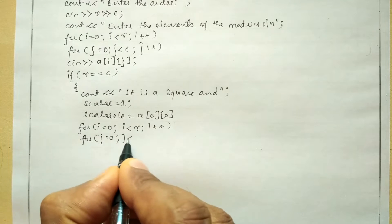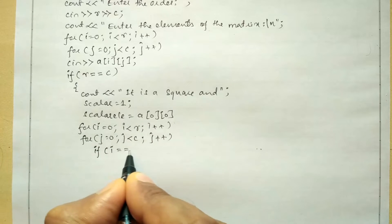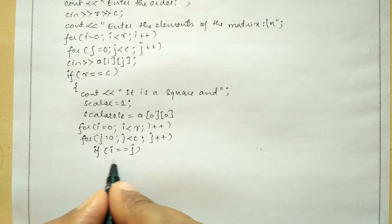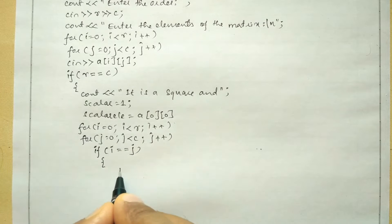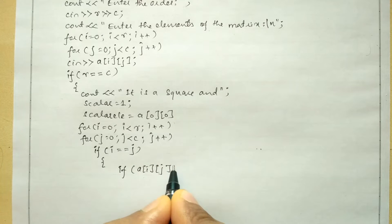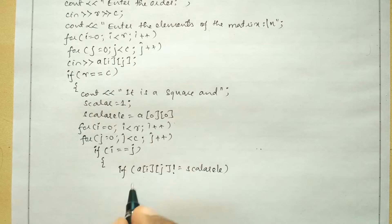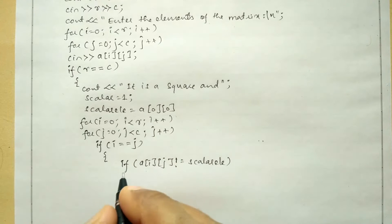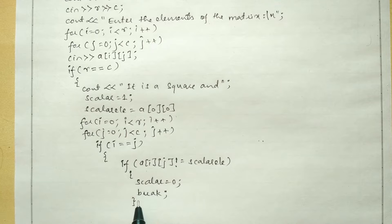Next, we use the same nested for loops: for i = 0, i less than row, i++; and for j = 0, j less than column, j++. We check if i equals j to identify the principal diagonal elements. Then we check if a[i][j] is not equal to scalar element; if so, we set the scalar variable to zero and immediately break out of the looping structure.